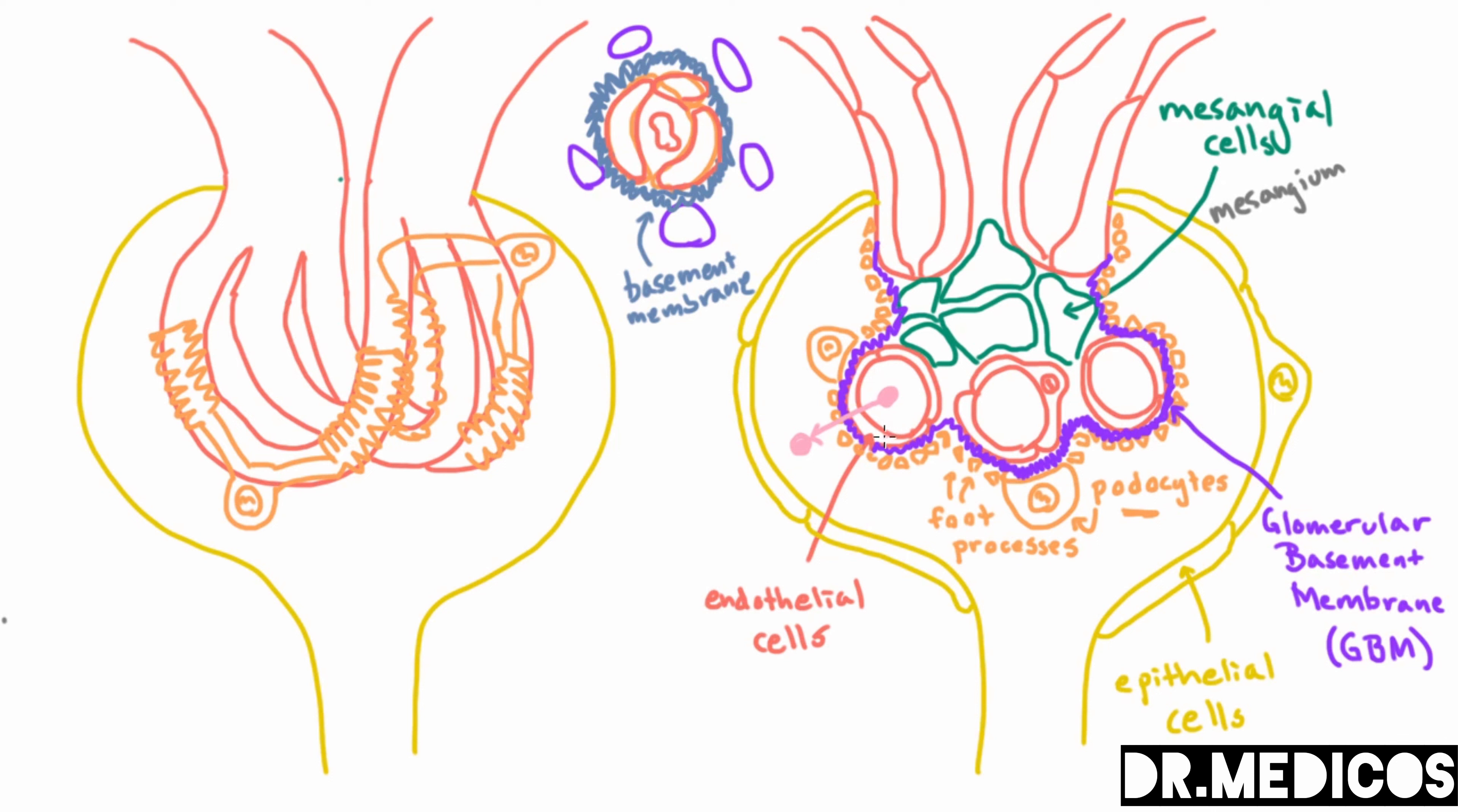First it needs to get through the endothelial cell, then it needs to get through the GBM as we call it, and then it needs to get through the foot processes of the podocytes.